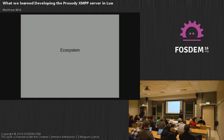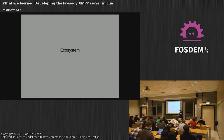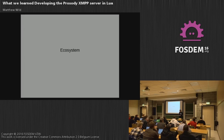LuaSec didn't support certificate verification, so we could encrypt our connection but had no idea if we were talking to the NSA or to the person we really wanted to talk to — pretty bad. So we implemented that, allowing you to get details of the certificate you were connecting to and match it up with who you expected. For LuaExpat, we didn't need more features per se, but it was a wrapper around the expat C library, and over time we needed to expose more of expat's API for security reasons — for example, putting a limit on how far it would parse the stream so we didn't end up using loads of memory.